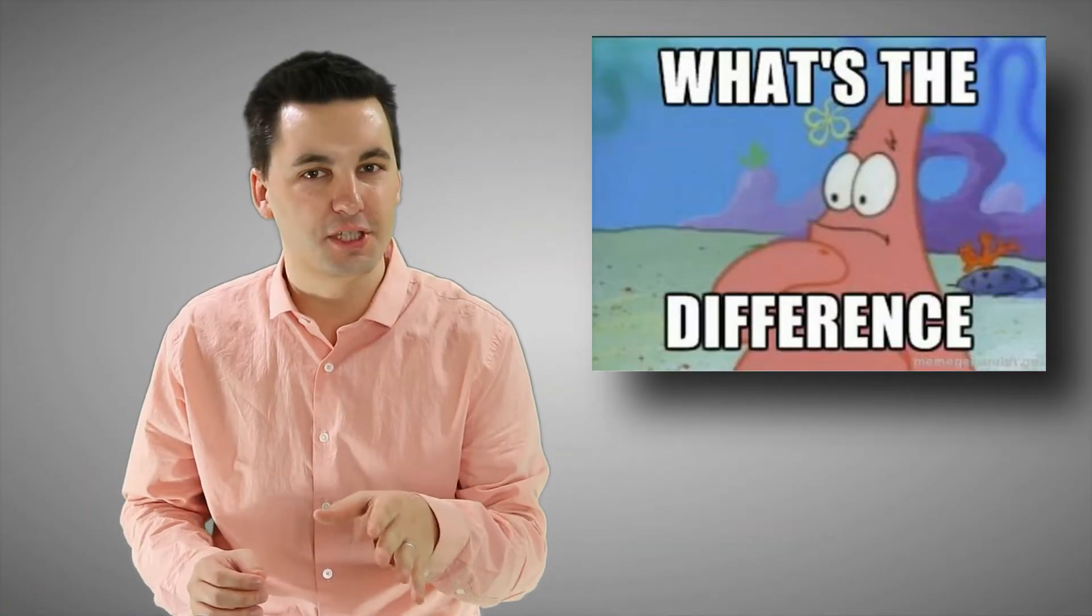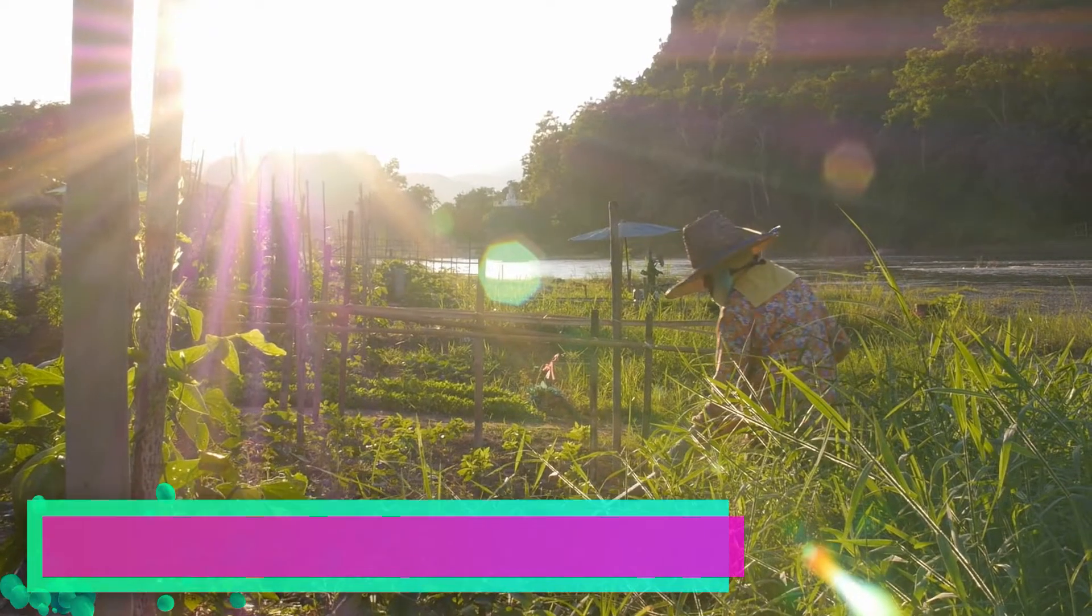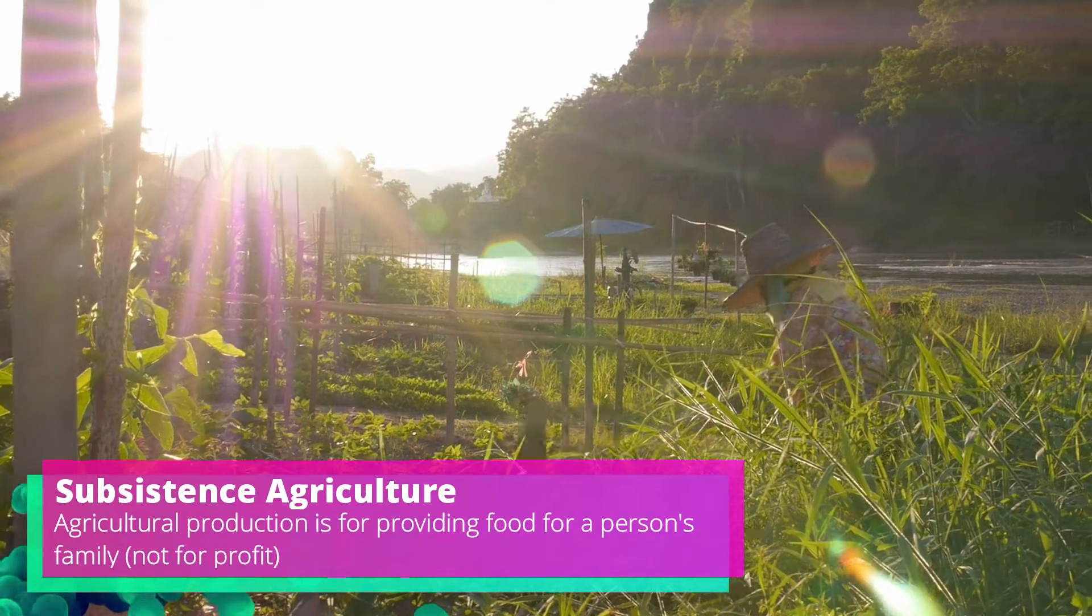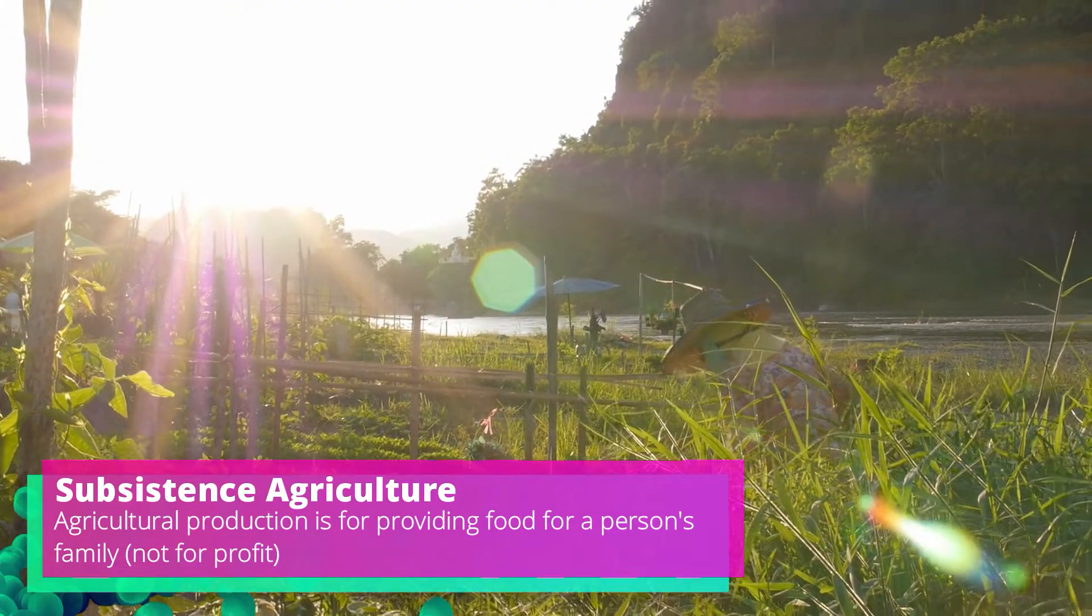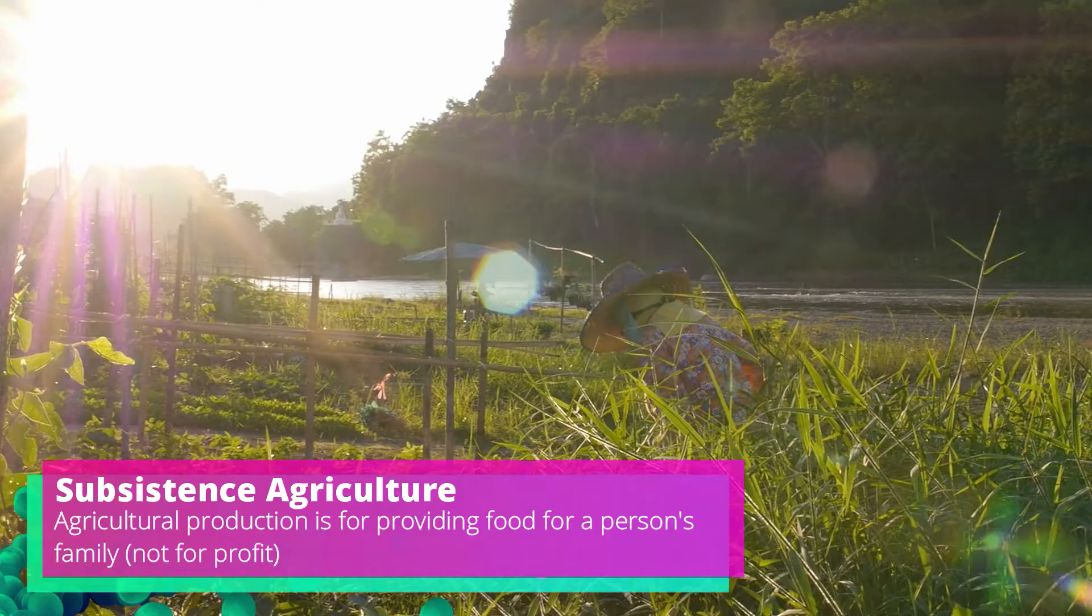And before we get into this video I need to make sure you know the difference between subsistence agriculture and commercial agriculture. Subsistence agriculture is agricultural production that is done for providing food for a person's family or local community. The goal here is not to grow food for profit.